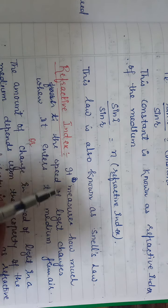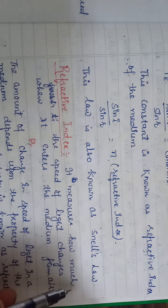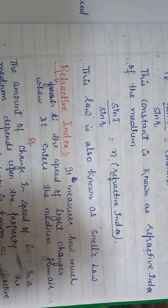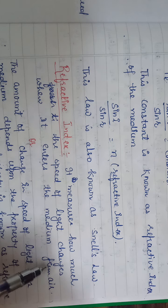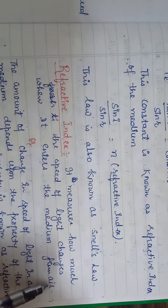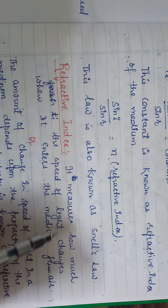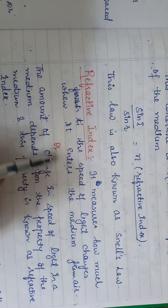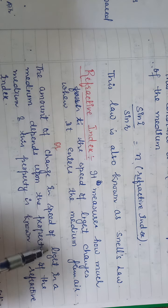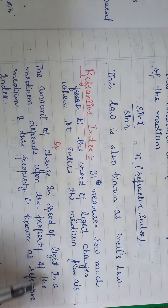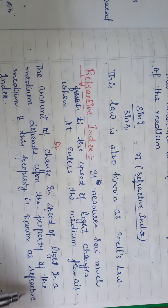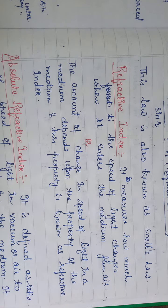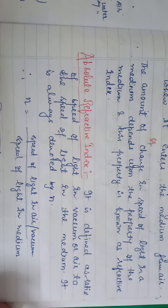Now, what do you mean by refractive index? Refractive index gives us the measure of how much the speed of light changes when it enters a medium from air. It means what happens to the speed of light — whether it will increase or decrease — when it goes from one medium to another medium. The amount of change in the speed of light in a medium depends upon the property of the medium, and this property is known as refractive index.